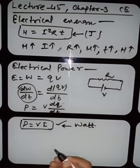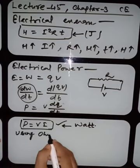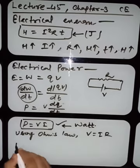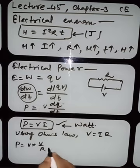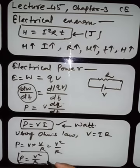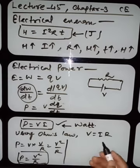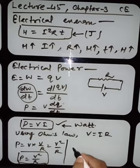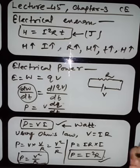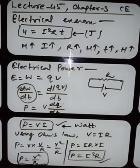You can convert this power formula in three ways using Ohm's law V equals IR. First: P equals VI. Second: replace I with V/R to get P equals V²/R — this is very important. Third: replace V with IR to get P equals IR times I, so P equals I²R. So we have three formulas for power: P equals VI, P equals V²/R, and P equals I²R.